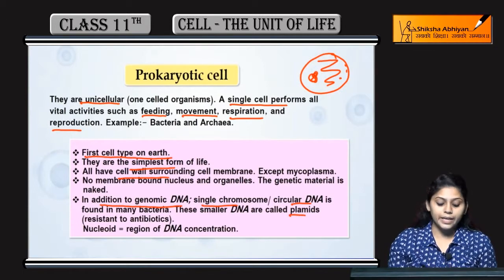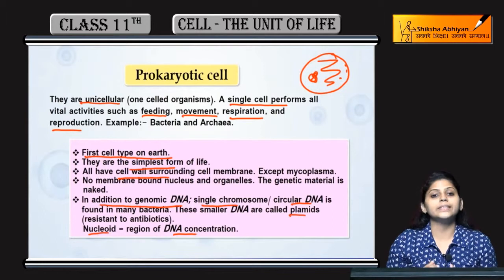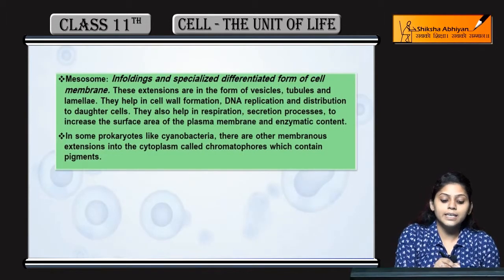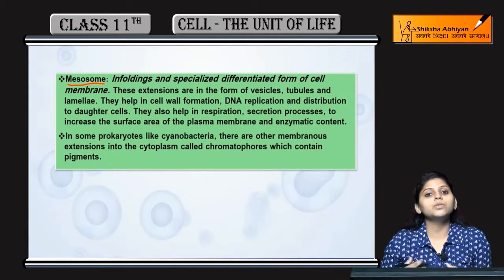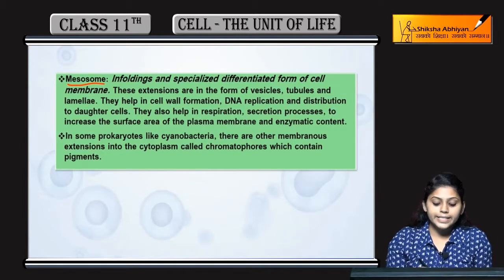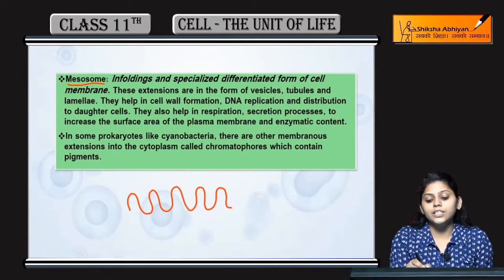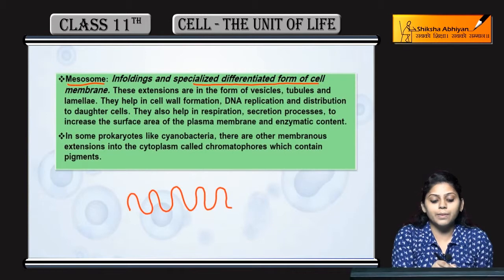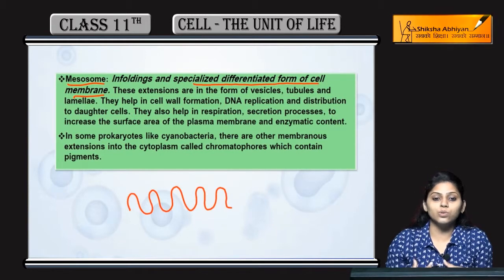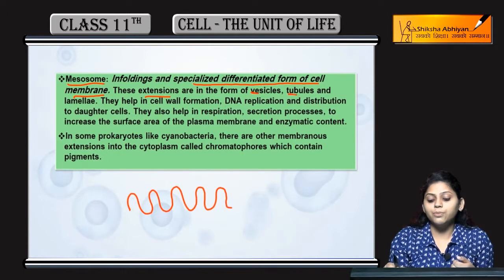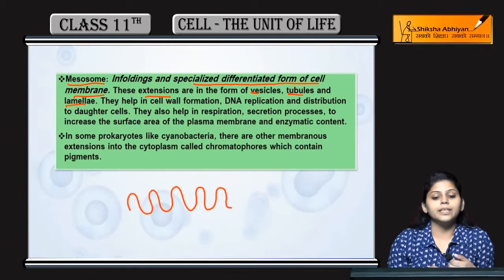Nucleoid वो region होता है जहाँ पे DNA concentrated होता है. एक और feature है prokaryotic cells की — mesosomes. यह mesosomes cell membrane की foldings होती हैं. These are the specialized differentiated form of cell membrane. यह extension vesicles, tubules and lamellae के form में होती है.